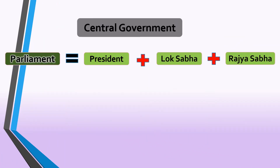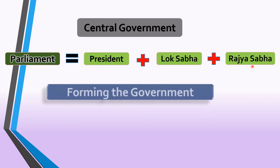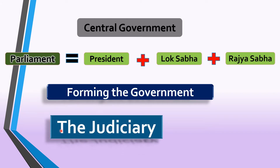Good morning children. This is our social studies class and we are on chapter 18, Governing Ourselves. In our last class, we have discussed Parliament, President, Lok Sabha and Rajya Sabha. In today's class, we are going to learn about forming the government in state and central both, and we will also be learning about the judiciary of India.